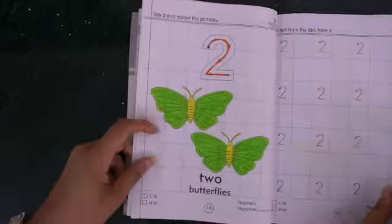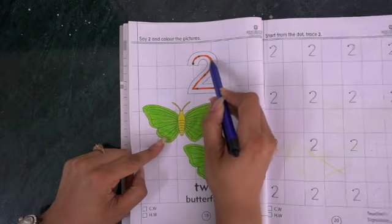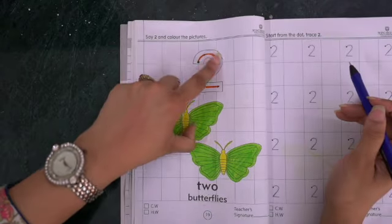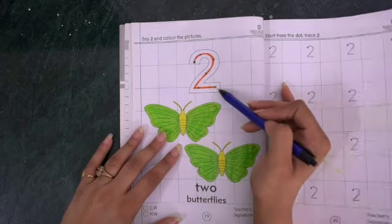After that, we have number two. From this dot, we will go all the way down and then here with this arrow. What is this? This is number two.